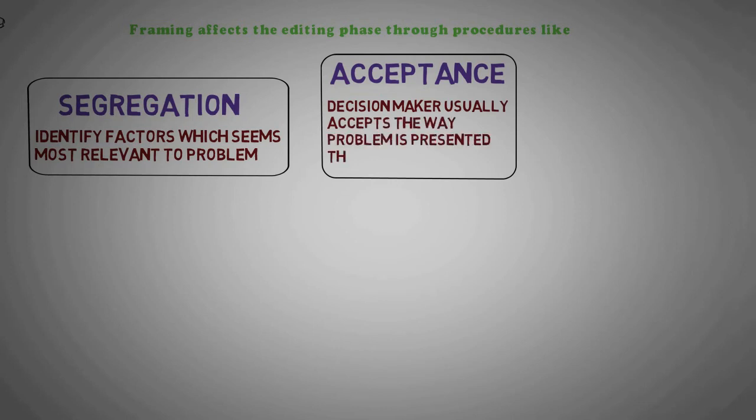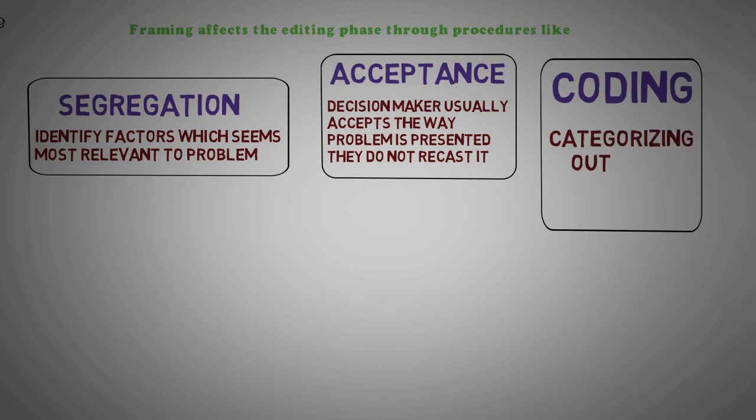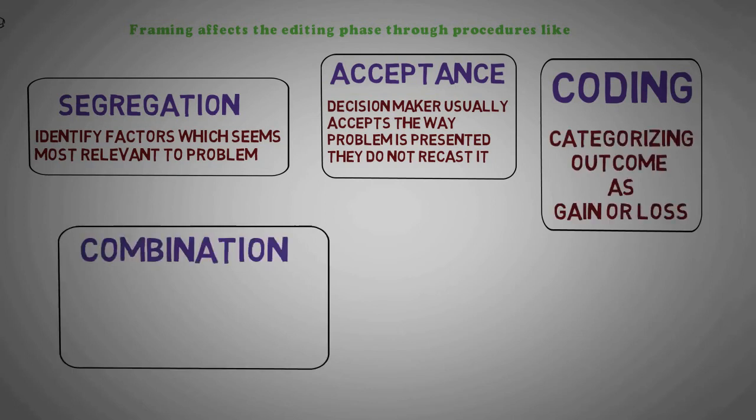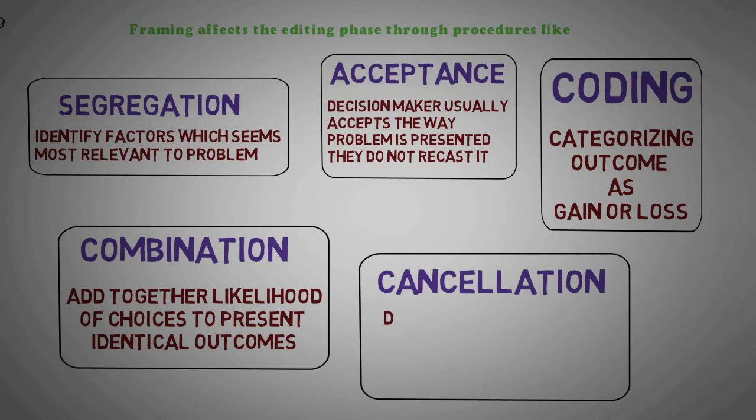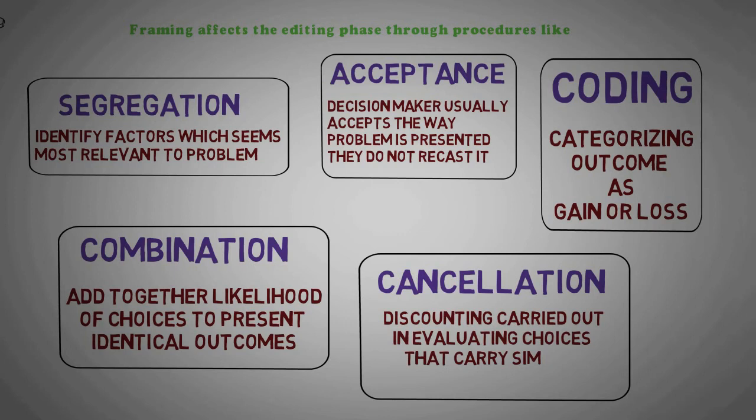Framing affects the editing phase through procedures like: segregation - that is identifying factors which seem most relevant to problem; acceptance - decision maker usually accepts the way problem is presented, they do not recast it; coding - categorizing outcome as gain or loss; combination - add together likelihood of choices to present identical outcomes; and cancellation - discounting carried out in evaluating choices that carry similar outcomes.